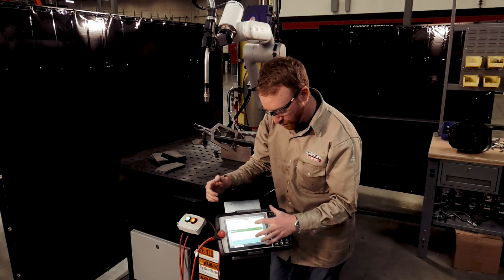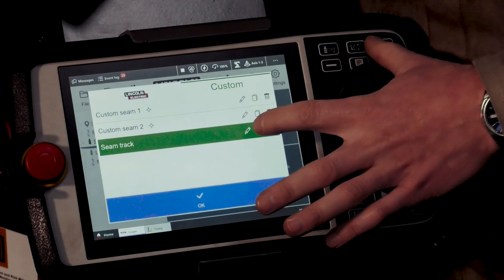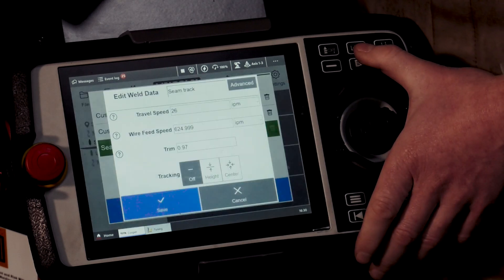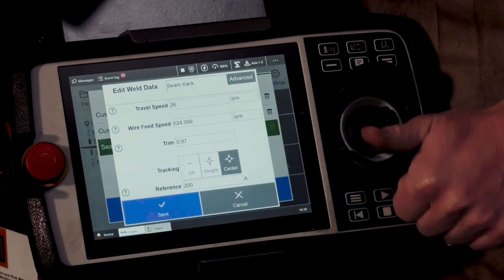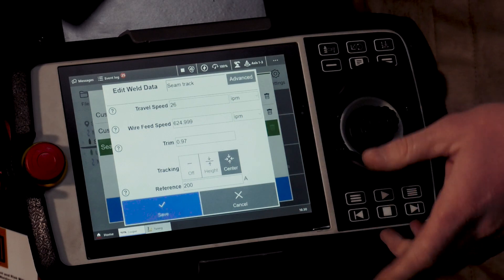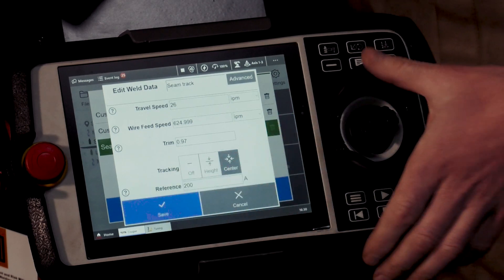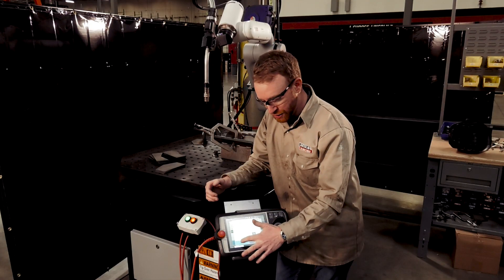It'll go into our custom welds. And in here, we're just going to make sure to edit this. Now, here's the big part. We've got to turn that seam tracking on. So, we're just going to make sure we are tracking to the center of the weld. After that, we've just got to save.